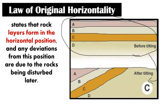The oldest sequence is D, C, B, A. But movement of the earth occurred after the formation of layer A, which caused the tilting of these rock layers.